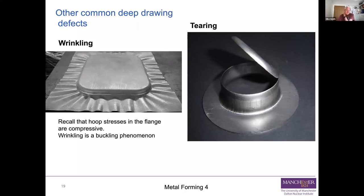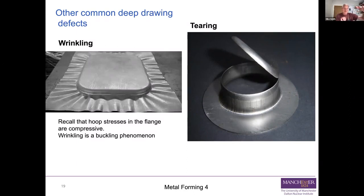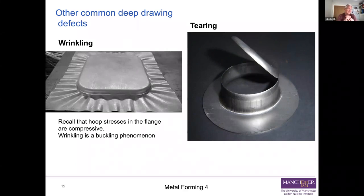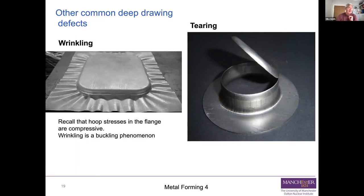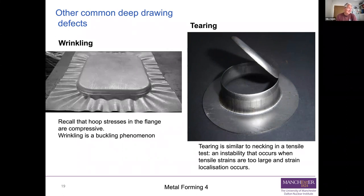And then tearing. This is what happens when you put so much tensile deformation in that you start to form a neck as the material goes around the profile between the die and the punch and the bottom of the punch itself. That's where the tensile deformation is biggest - sufficient to start to form a neck in tensile loading. Once you start to form a neck, you localize strain, and additional plastic strain goes in there rather than anywhere else. You just push the end of your component off. Similar to necking in a tensile test - it's an instability that occurs when the tensile strains are too large for your material.